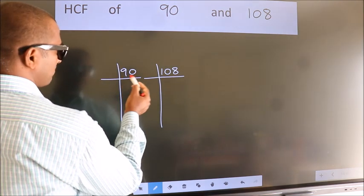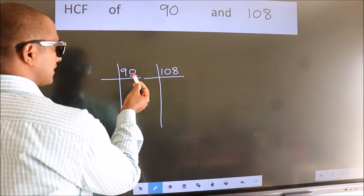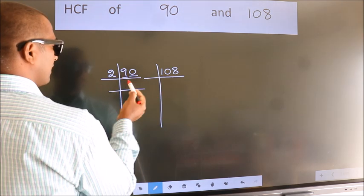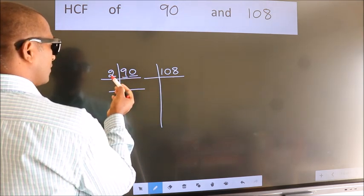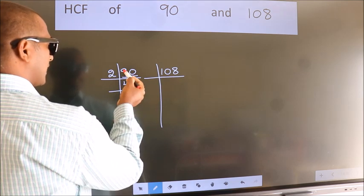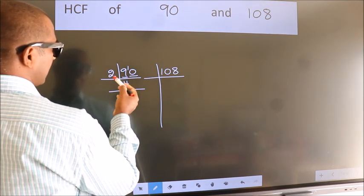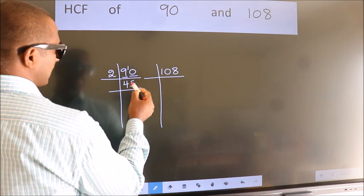In this number, last digit 0, so take 2. First number 9. A number close to 9 in 2 table is 2 fours 8. 9 minus 8, 1, 1 carried forward 10. When do we get 10 in 2 table? 2 fives 10.